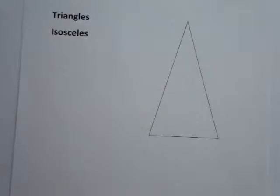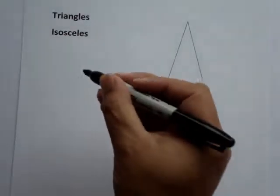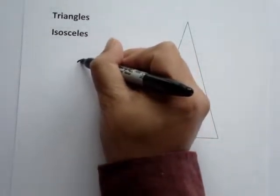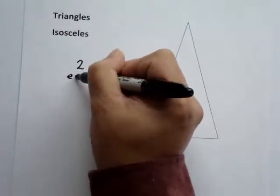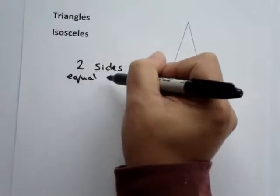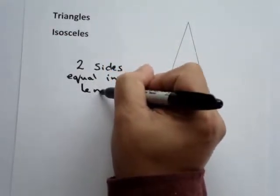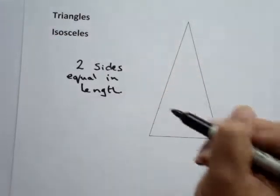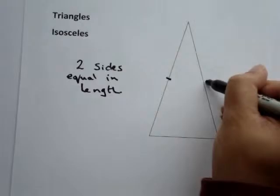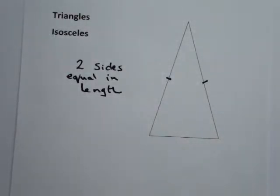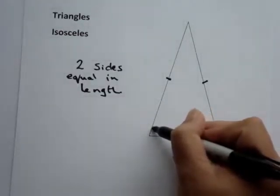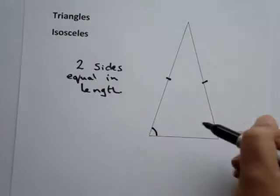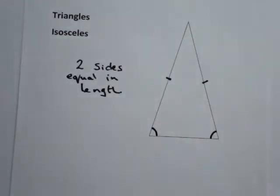Here we have an isosceles triangle. With an isosceles triangle, we have two sides equal in length. You can tick-mark those two sides — they're equal in length. Also, using semicircles to mark the angles, we have two angles which are also equal. So this angle and this angle will also be equal. That's an isosceles triangle.